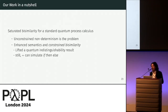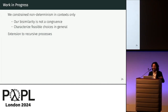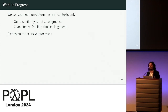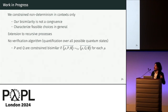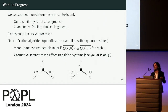In conclusion, we explored existing issues with quantum bisimilarities, determined that the issue lies in unconstrained non-determinism, and built an enhanced semantic-constrained bisimilarity that lifts indistinguishability results while still keeping non-deterministic choice expressive enough. Obviously we also want to characterize feasible choice in general, also in processes, hoping to recover the congruence missing in previous solutions. We also want to extend the syntax with recursive processes. There is a pending issue with verification: since we have to quantify over all possible quantum states, it is infeasible to verify such bisimilarity directly; however, we are working on an alternative semantics — a vector transition system — that we plan to present at QCPC, where we hope to solve this issue.